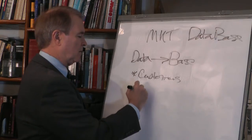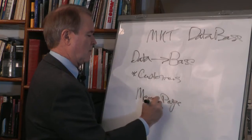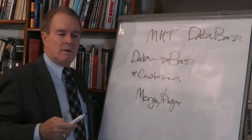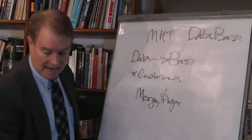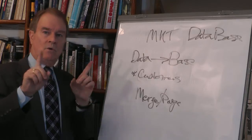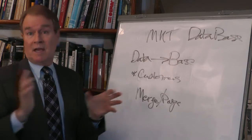Because most of the database companies that exist today were built on what's called merge-purge. And merge-purge was the idea that it's better to mail two catalogs to two households than it is to mail two catalogs to one household on the same day, same time person.